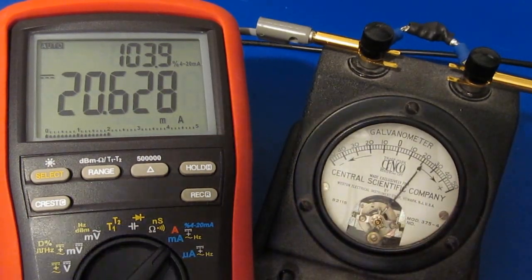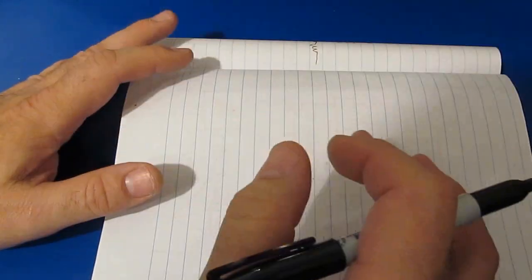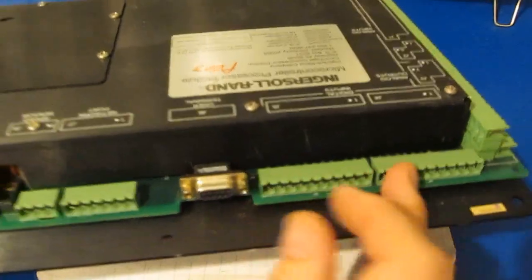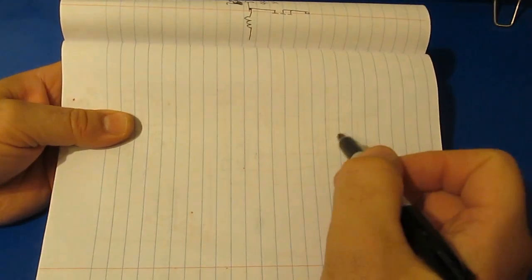What is a 4 to 20 current loop? Basically the idea is that we want to make a system that's very immune to the environment that it's being used in. You'd see a system like this being used in industrial type applications. I've actually worked on systems like this. This is a PLC controller that I helped work on many years ago.